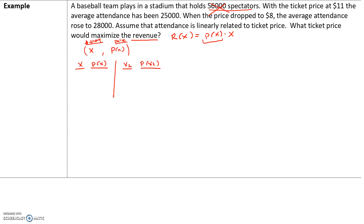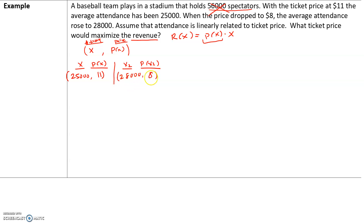With a ticket price of $11 — remember, the price is always the Y value — and attendance of 25,000, our first ordered pair is (25,000, 11). Our second ordered pair: when the price dropped to $8 and attendance rose to 28,000, that's (28,000, 8).